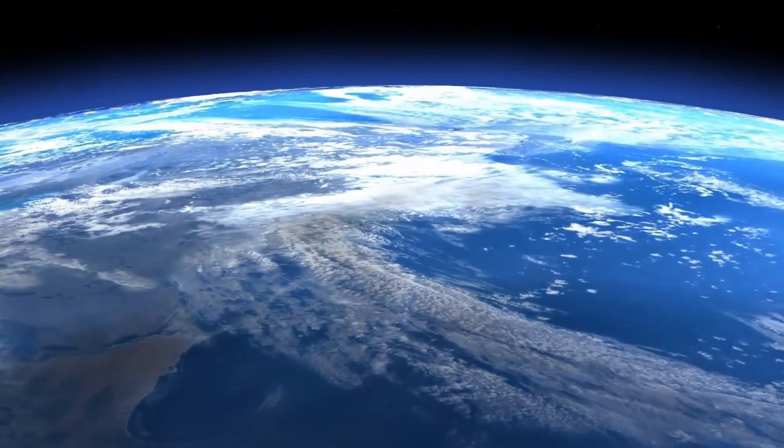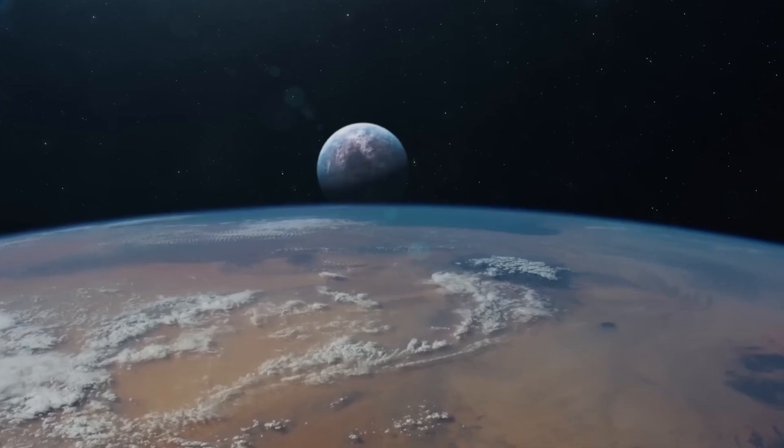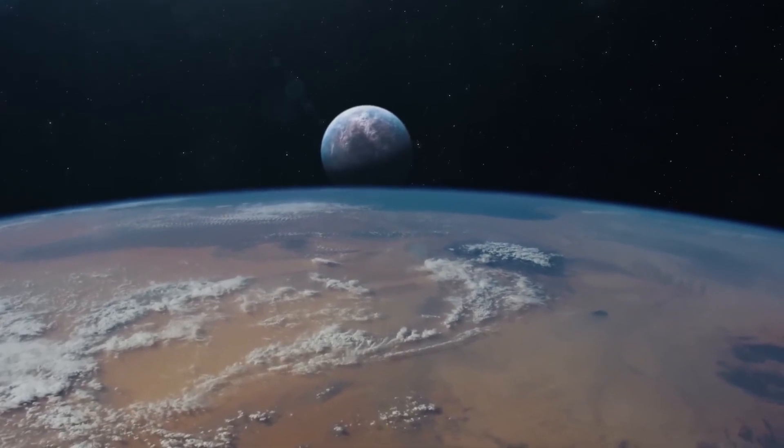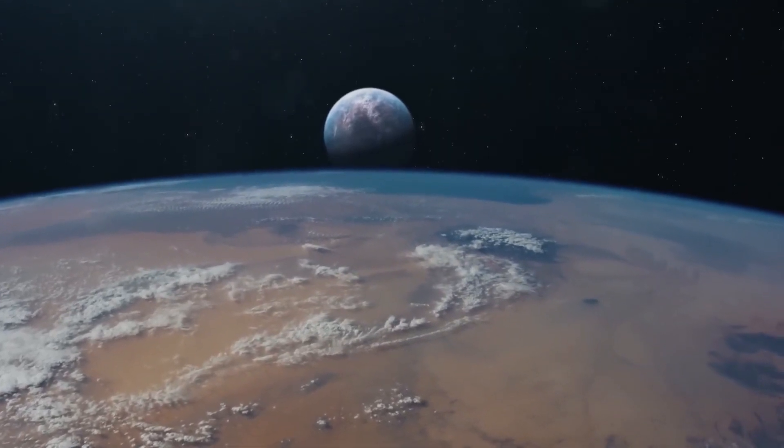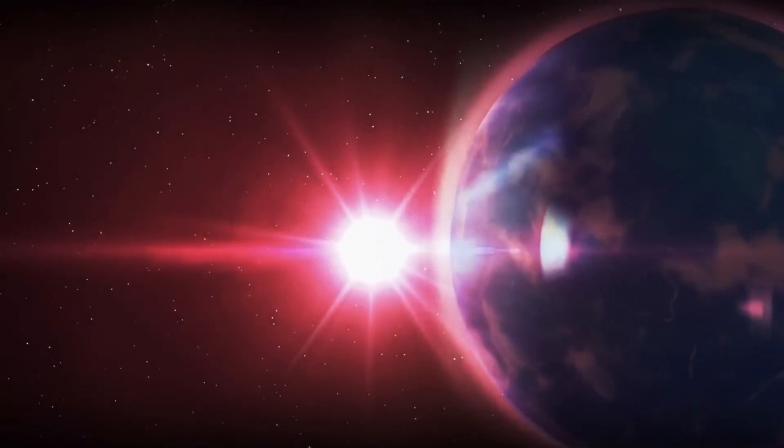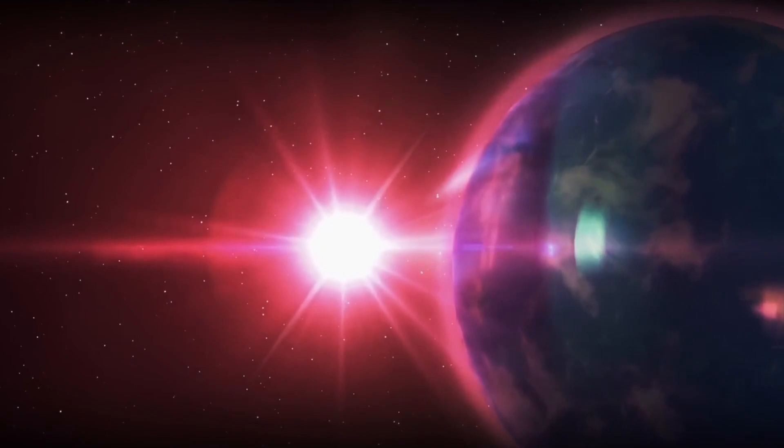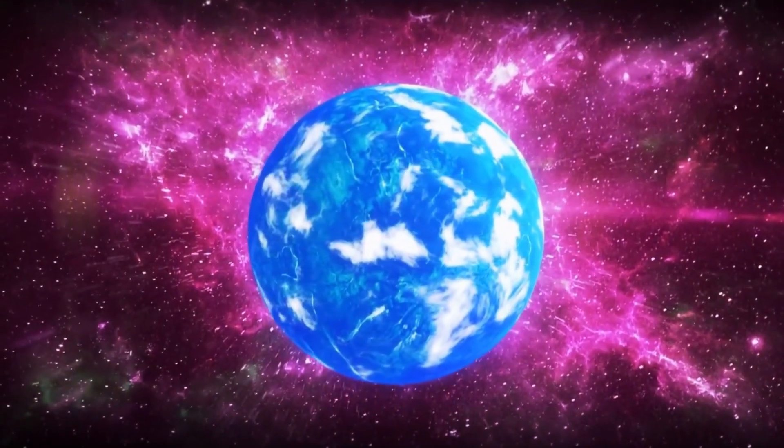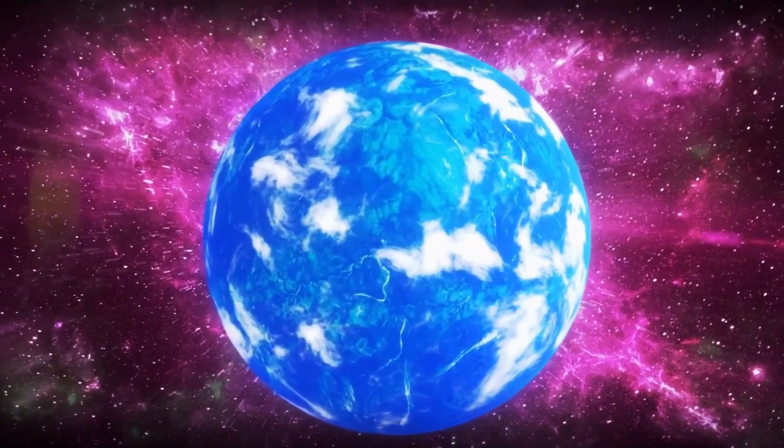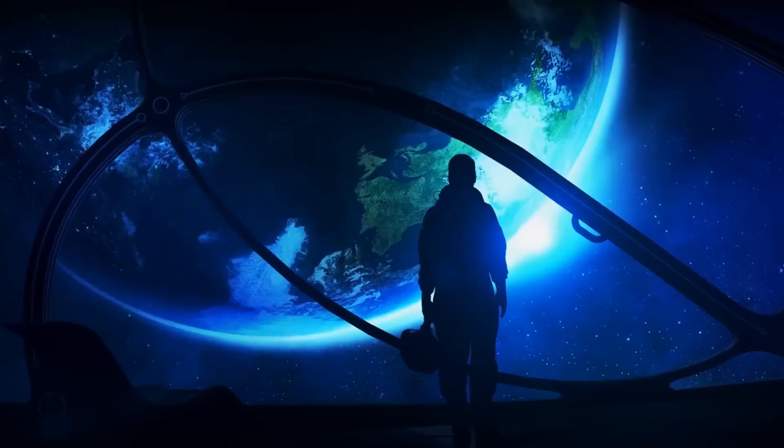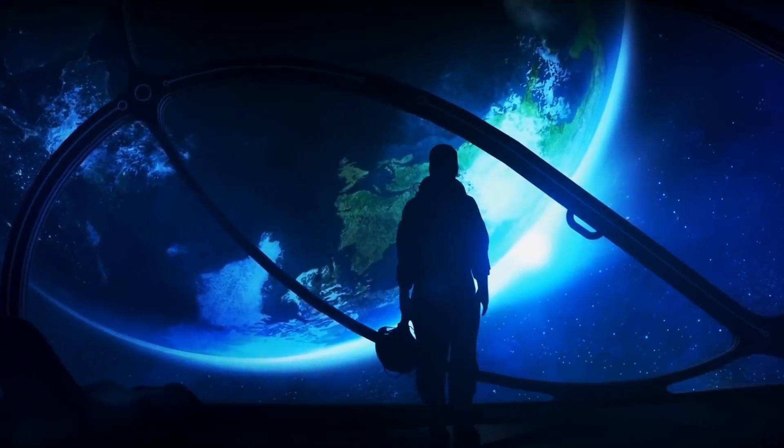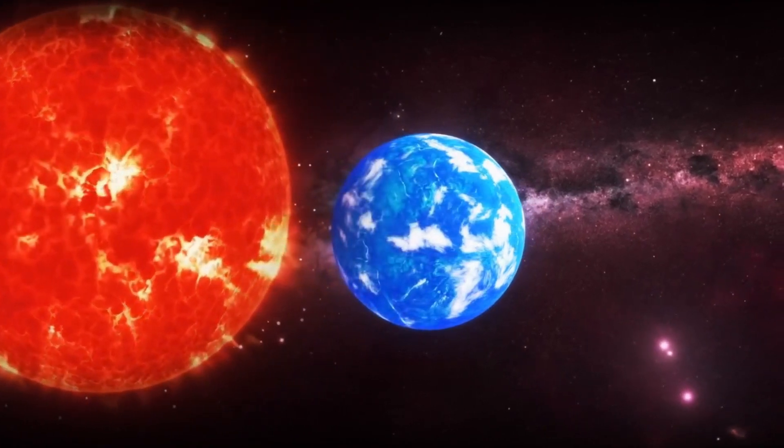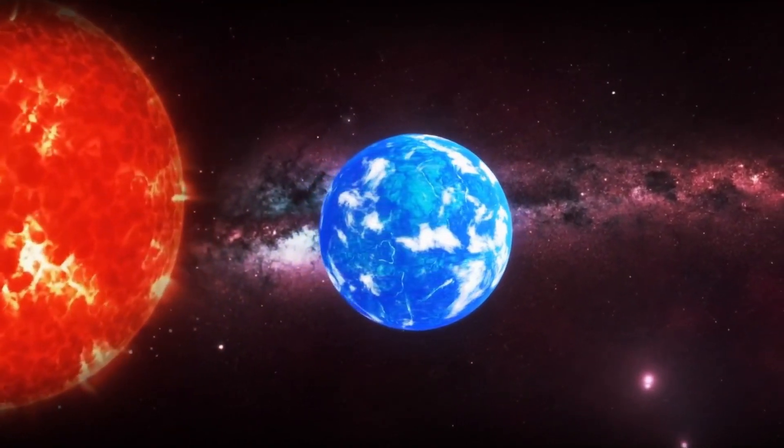Moreover, delving deeper into the context of this exoplanet, KY 5715.01 emerges as a beacon of promise due to its placement within a planetary system that boasts an extraordinary age of 5.5 billion years. This chronological milestone positions this world approximately 1 billion years ahead of the evolutionary timeline of our own solar system. Such an extended period offers an expansive window for the potential emergence and evolution of life forms, potentially fostering a more intricate and diverse tapestry of life than what our planet has witnessed.